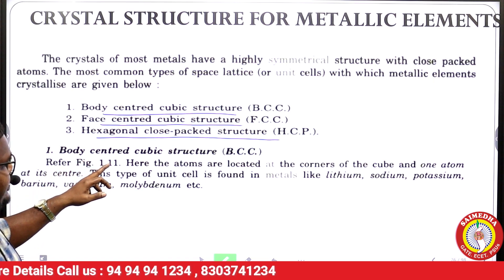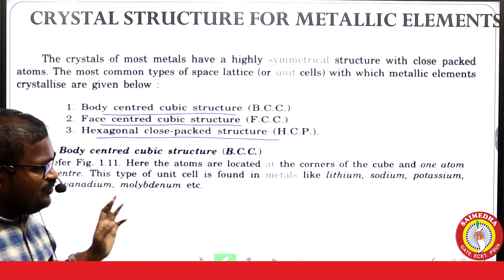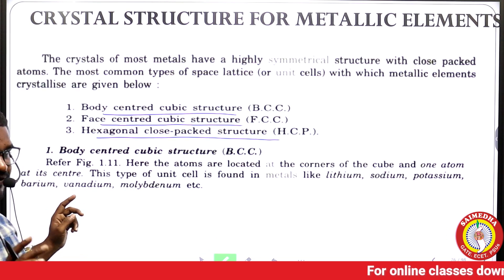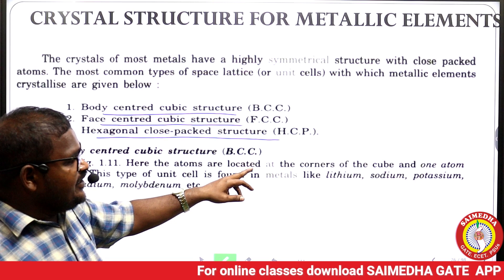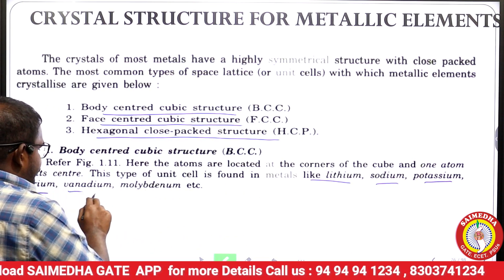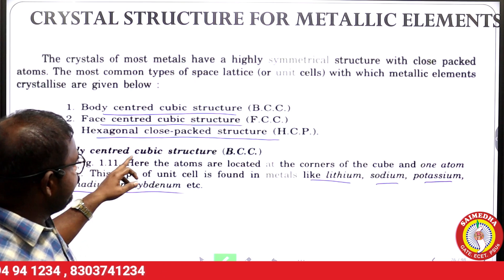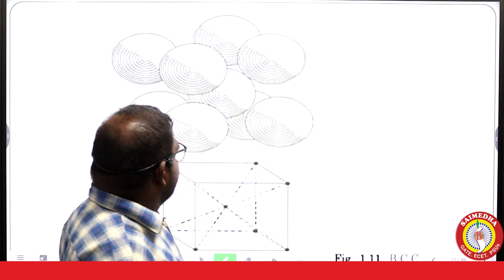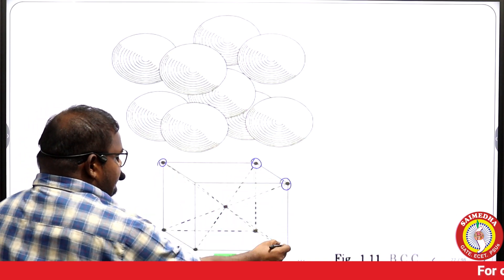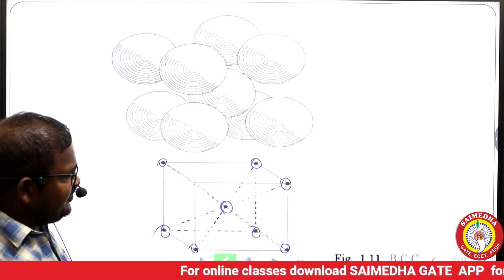First, let us look at body-centered cubic (BCC) structure. The name itself indicates that the body is centered in the cubic structure — atoms are located at all corners of the cube and one atom is located at its center. This type of unit cell is found in metals like lithium, sodium, potassium, barium, vanadium, and molybdenum.